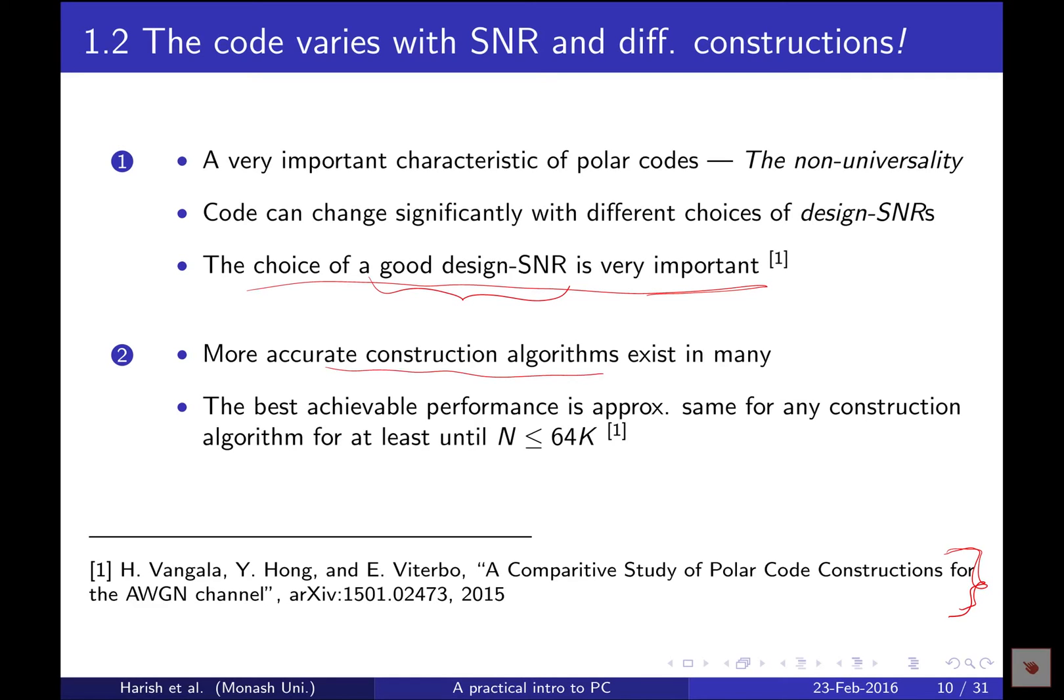Irrespective of the construction algorithm, you can achieve the same performance, but not without choosing a good design SNR. At different design SNRs you get different codes which perform differently. Choose a good design SNR as given in that paper, then simply use the recursive algorithm I've been explaining. This is good enough at least up to 64,000 block length.